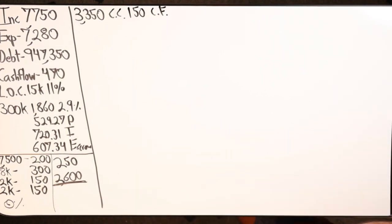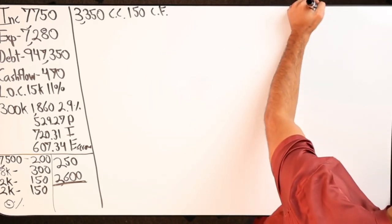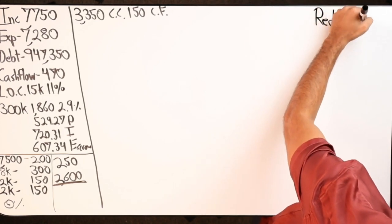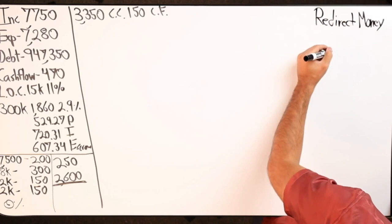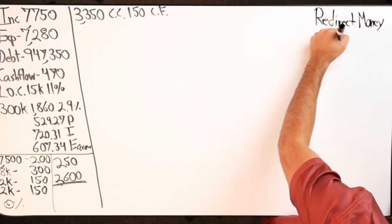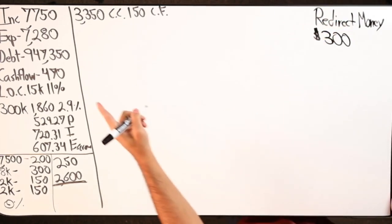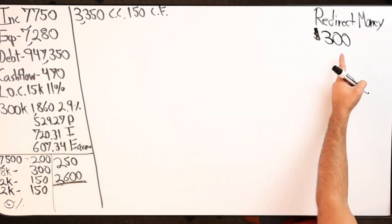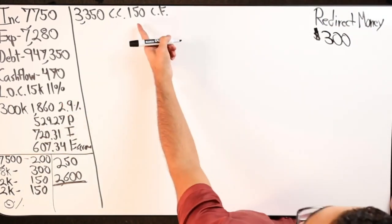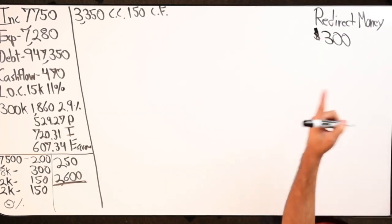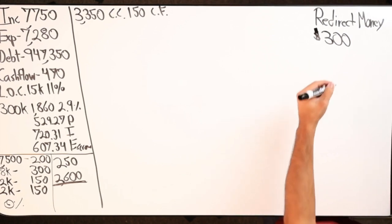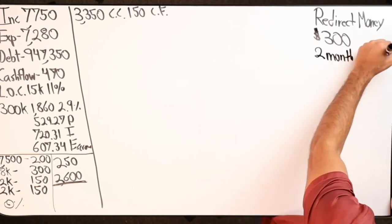And he also has the ability to also redirect money, if I did my notes right, redirect money of around $300 back to cash flow. So that brings me from $470 to $770, plus $150 brings me to $920 in cash flow. So I go from $470 to $920 in about a two-month period or less.